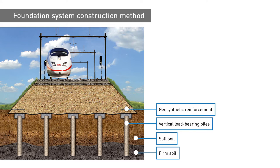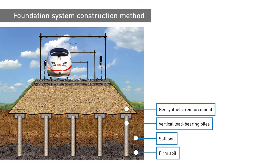Geosynthetic reinforcement. Its function is to act as a bridge between the vertical load elements, transferring the load from the soil located immediately above the geosynthetic reinforcement to the piles. By doing so, the vertical stresses applied to the soft soil between the piles is minimized. Reinforcement also prevents lateral sliding that can be caused by low shear resistance in the area at the toe of the embankment slope.